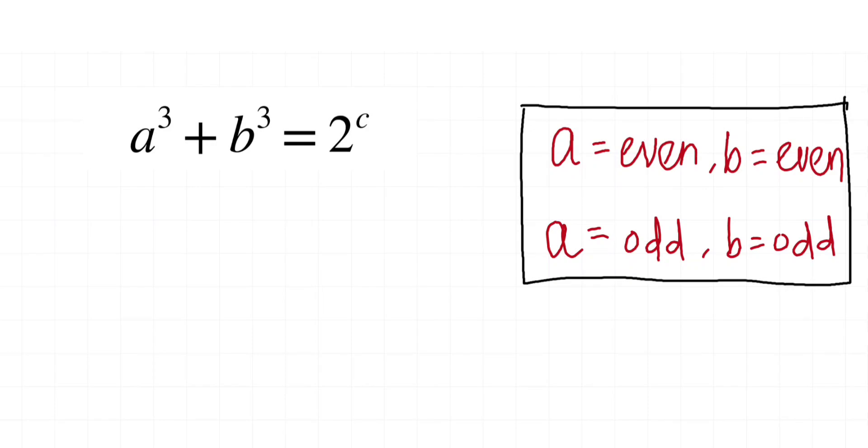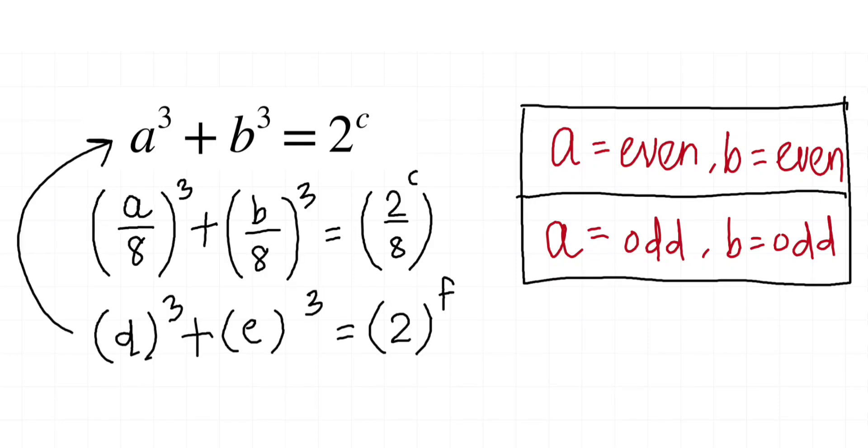Suppose both A and B are even, which is our first case. Then what we can do is divide both sides by 8. When you divide by 8, you get a new solution which is even smaller than the original one. If D and E are again even, then we can repeat this process until both D and E are odd.